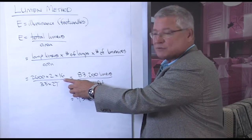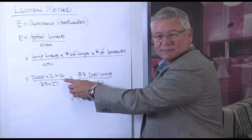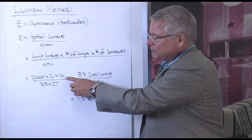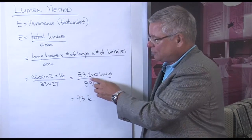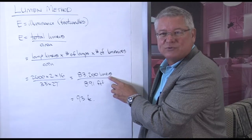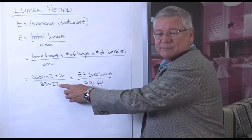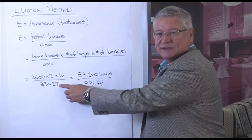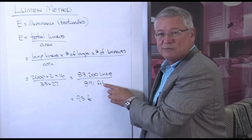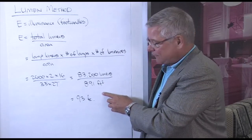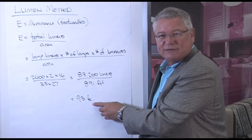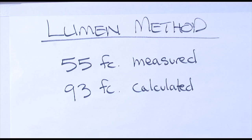In this case we have 2,600 lumens per lamp times 2, with 16 luminaires, which is a total of 83,200 lumens. If we divide that by the area — 33 feet by 27 feet, which is 891 square feet — we find 93 foot candles. In our cafeteria space we've measured 55 foot candles, but with a quick calculation we found that we expected 93 foot candles.